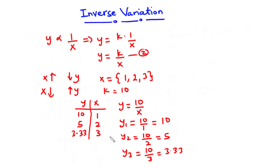In inverse variation, an increase in the x value results in a decrease in the y value, and a decrease in the x value results in an increase in the y value. Having this in mind, let's solve an example.